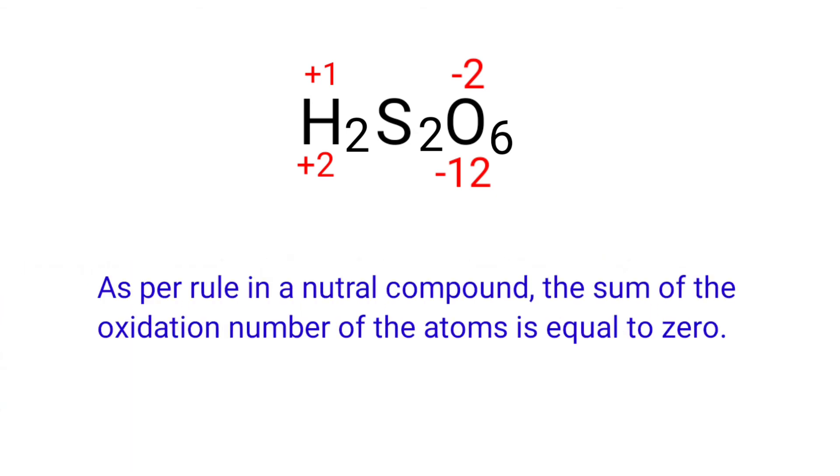As per rule in a neutral compound, the sum of the oxidation number of the atoms is equal to 0. So the numbers along the bottom must add up to 0. So the number under S2 must be +10.